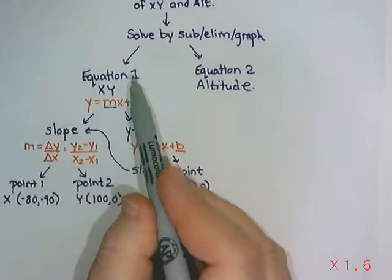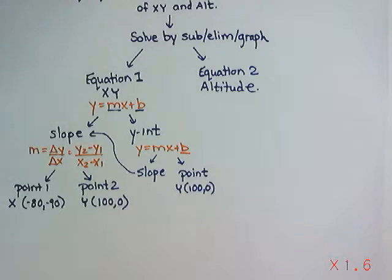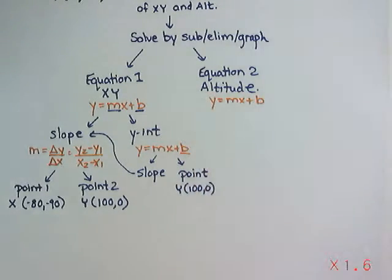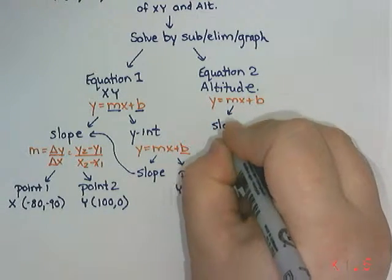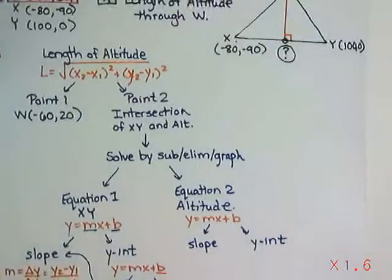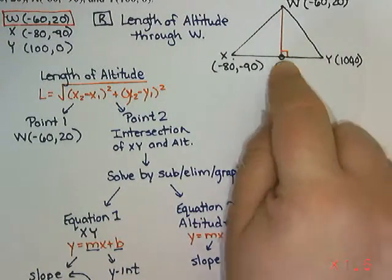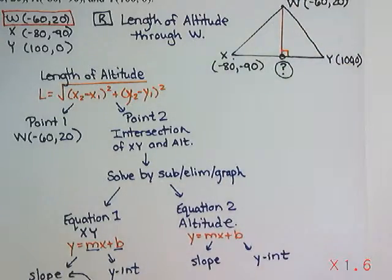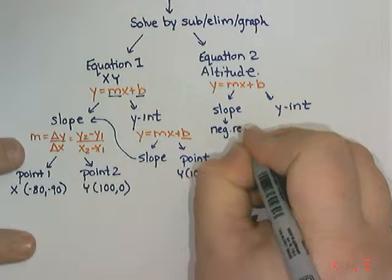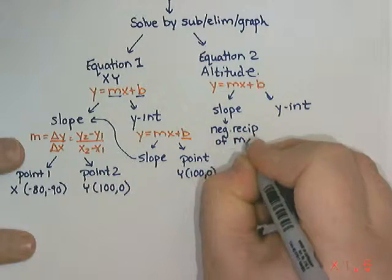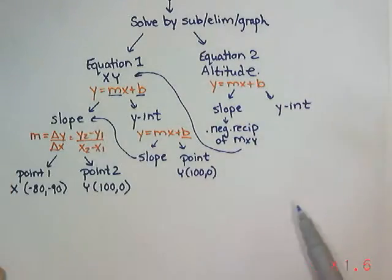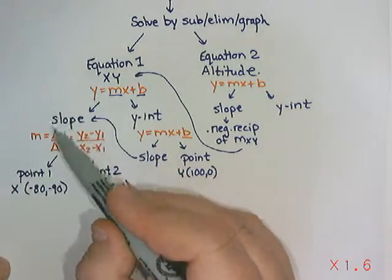So this is going to get me equation number one. Equation number two, the altitude. I have to think a little bit more about that. So we still want to do y = mx + b for this one. And I need a slope and I need a y-intercept. Now, the altitude meets XY at a 90-degree angle, which means they're perpendicular. And lines that are perpendicular have negative reciprocal slopes. So to get the slope here, we're going to do the negative reciprocal of XY, which we would have calculated somewhere over here when we did slope.